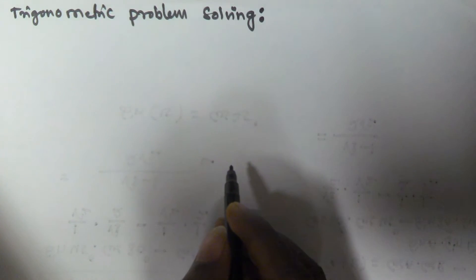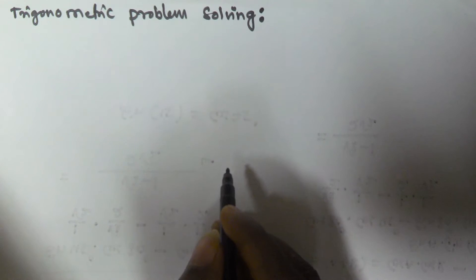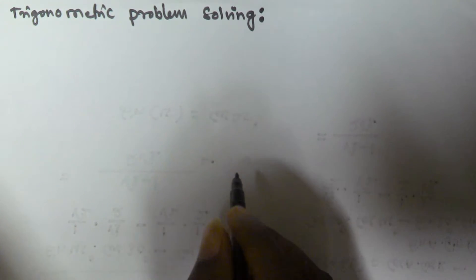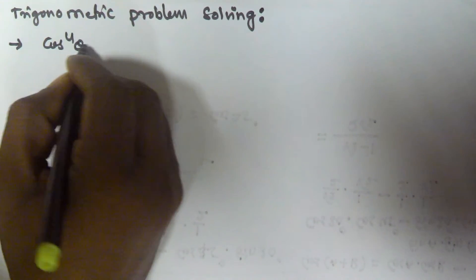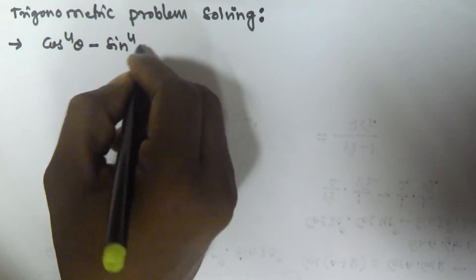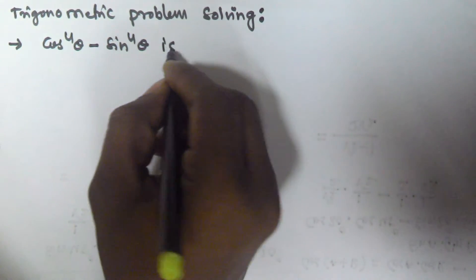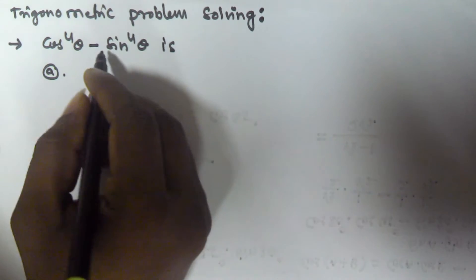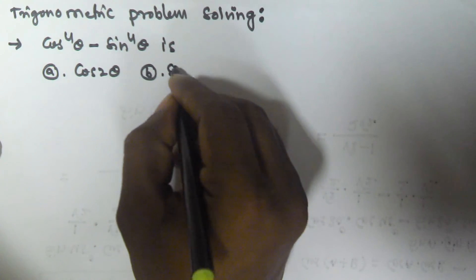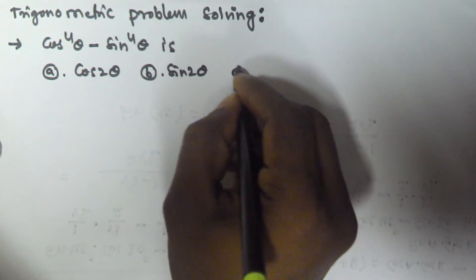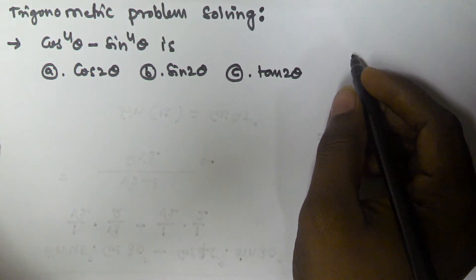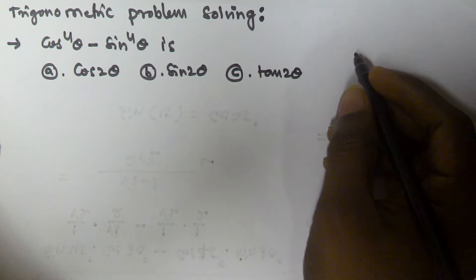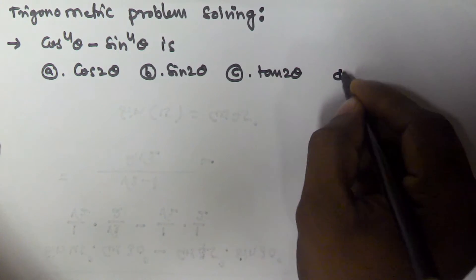Hello friends, in this video we will see more problems related to the trigonometric sum and difference formulas. The given problem is: cos to the power of 4 theta minus sine to the power of 4 theta. The options are: A is cos 2 theta, B is sine 2 theta, C is tan 2 theta, and D is none.